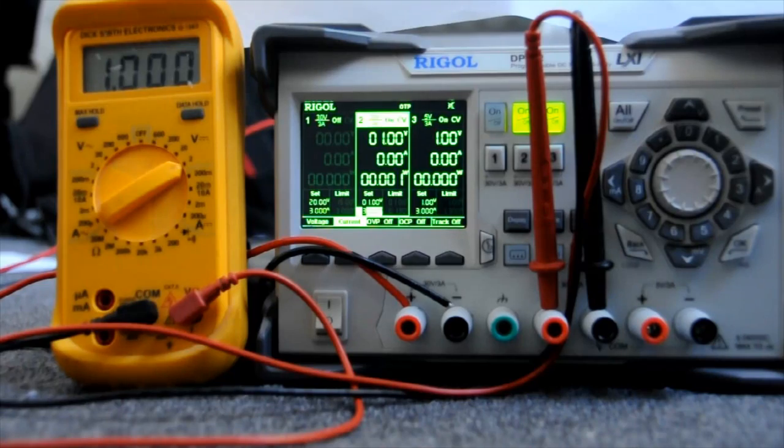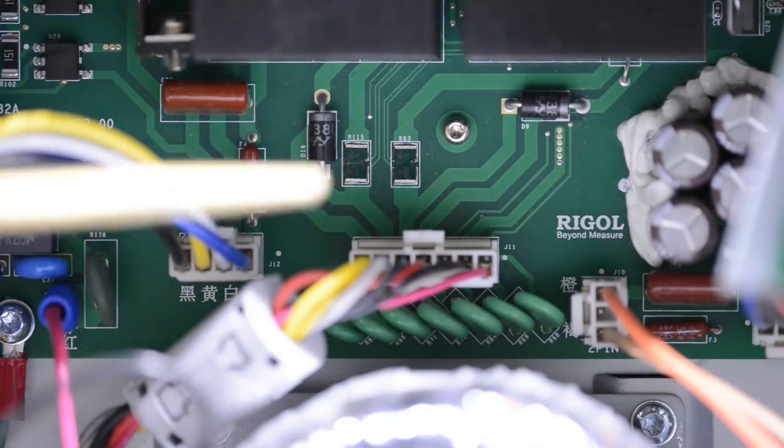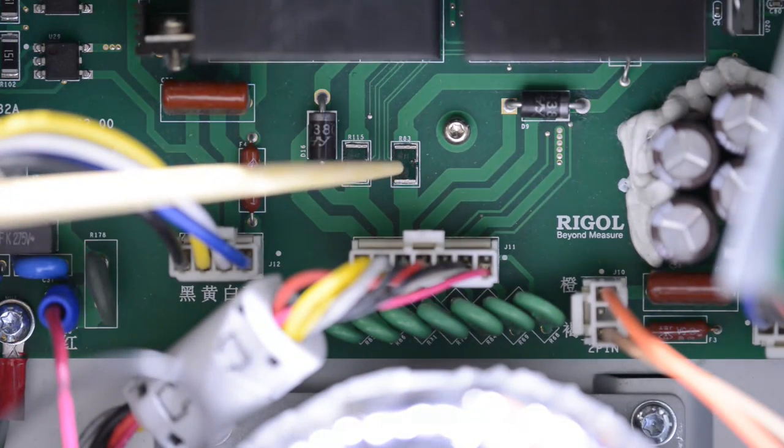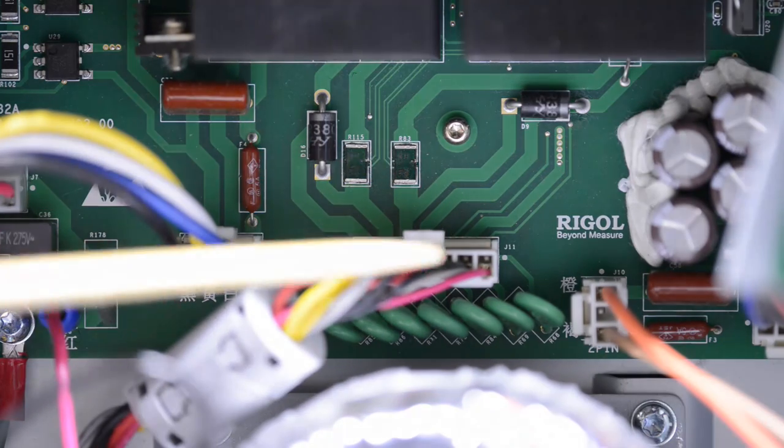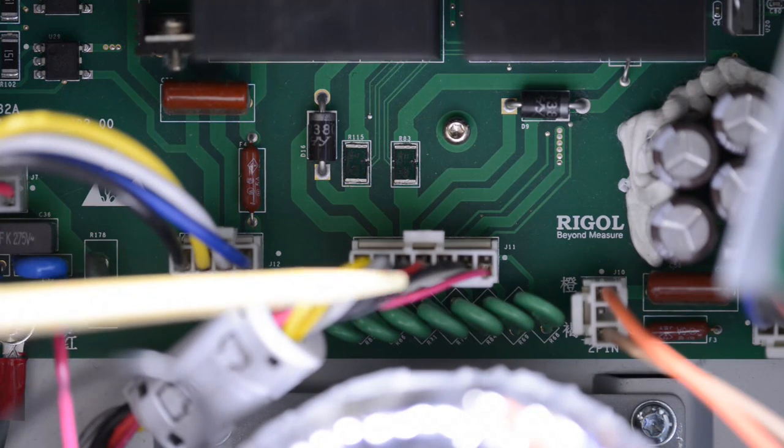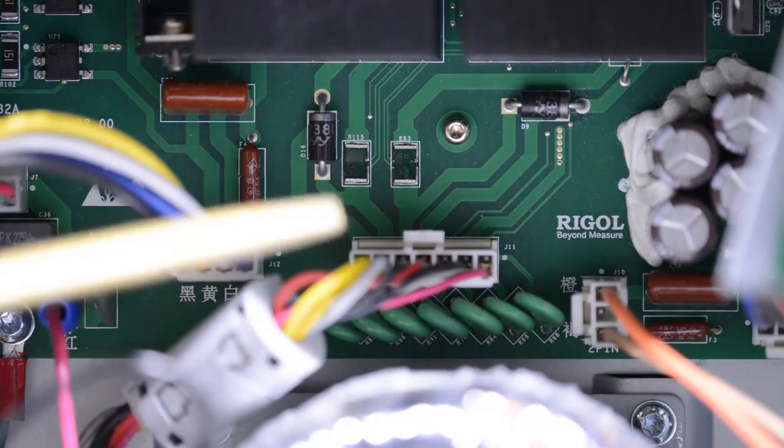So let's take a look inside to see why this happens. This board in here regulates channels 2 and 3. So this is the low side current sense resistor for channel 3 connected to the black cable there, which is the negative terminal of channel 3. And this is the same thing for channel 2 with the gray cable.